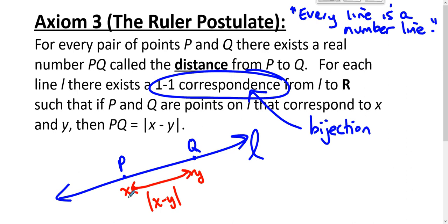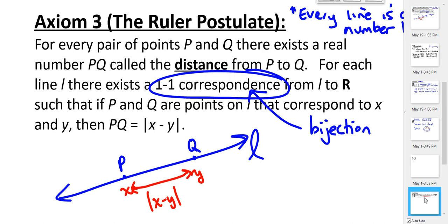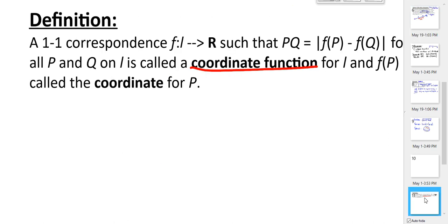And then it makes sense that subtracting two coordinates in a one-dimensional system should give us the distance between the points. So this is one of those things that makes sense if you're using the standard Cartesian metric, the standard distance formula that we've used for years.